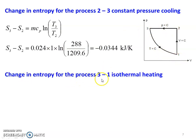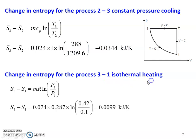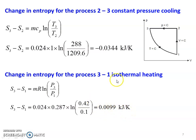Change in entropy for process 3 to 1, isothermal heating: S1 minus S3 equals M·R·ln(P3/P1). Substituting: 0.024 into 0.287 into ln(0.42/0.1) equals 0.0099 kilojoules per Kelvin. This is positive because it is a heating process. In summary: heating processes give positive entropy change, cooling processes give negative entropy change.